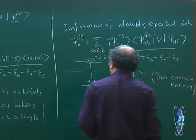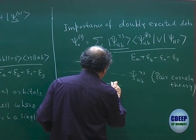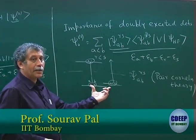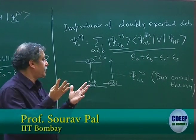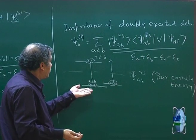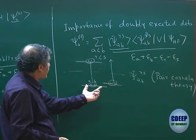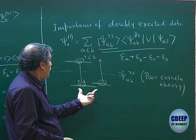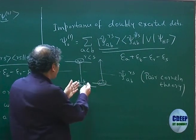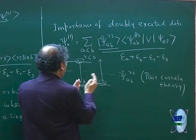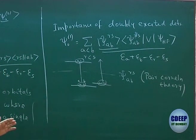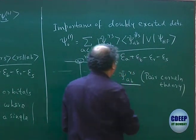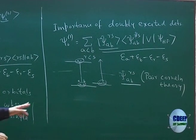For many-particle problems, you can have another set of pairs which can also get excited, and these two excitations can take place at the same time. What you will see is actually fourfold excitation — a quadruply excited determinant. But the probability of this taking place is a product of this pair and that pair, since they are taking place simultaneously and independently. This is the content of Sinanoglu's pair correlation theory.